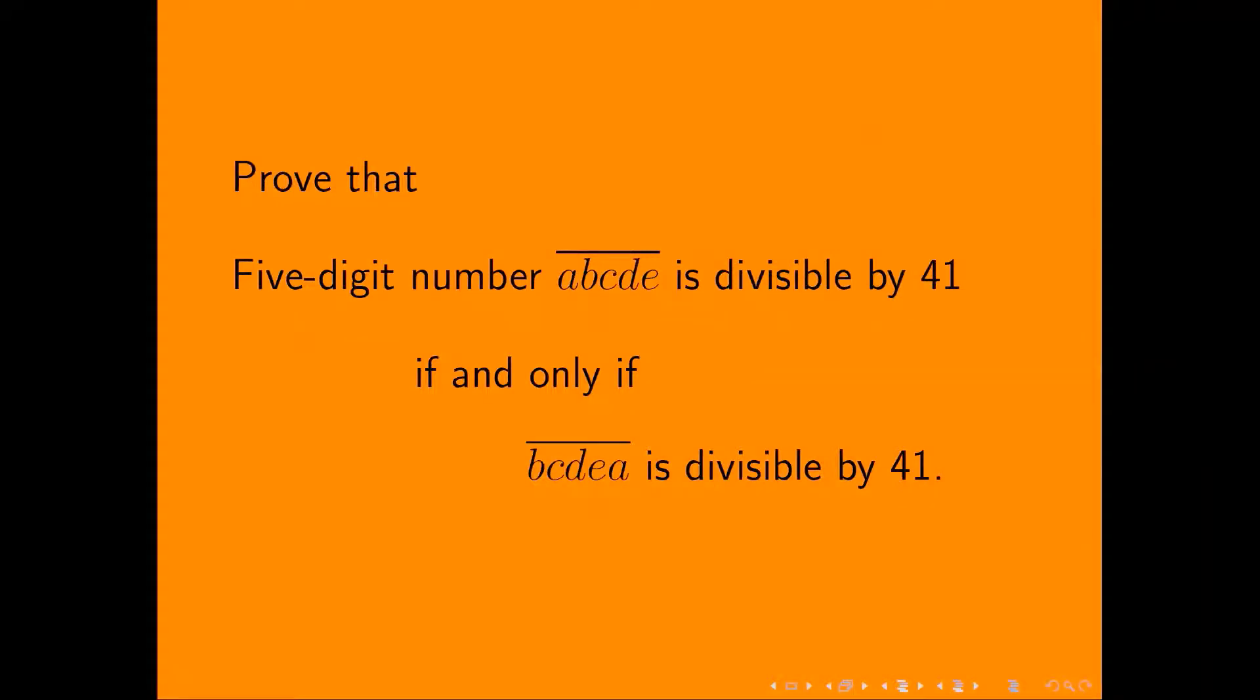Hello everyone! Let's look at this simple number sense problem. We have a five-digit number ABCDE. If we move the first digit to the last, we get another five-digit number BCDEA. We are going to prove that these two numbers are divisible by 41 at the same time.